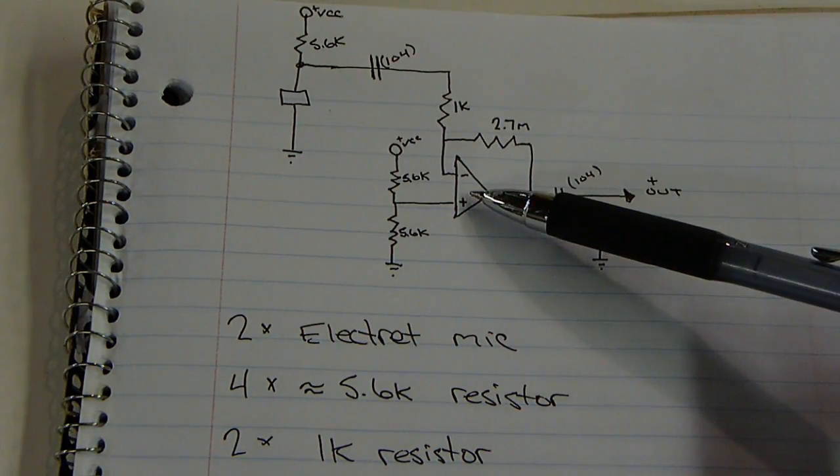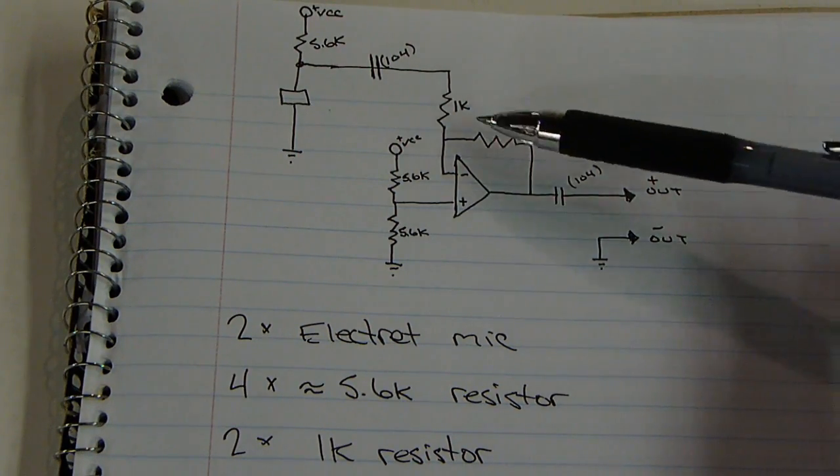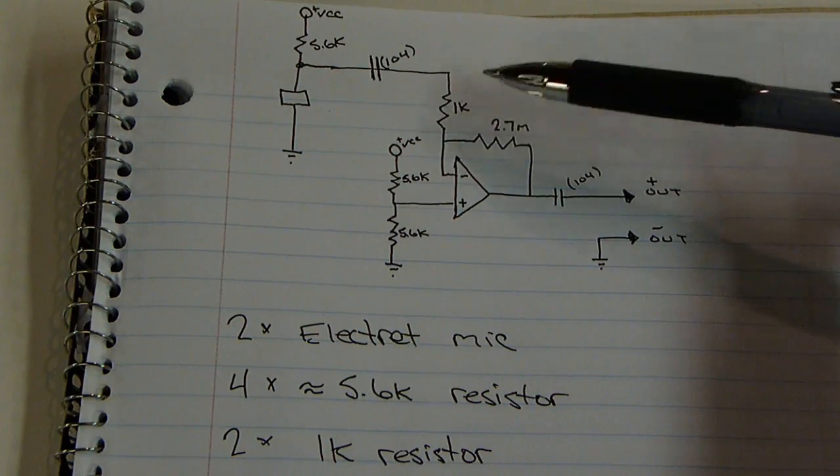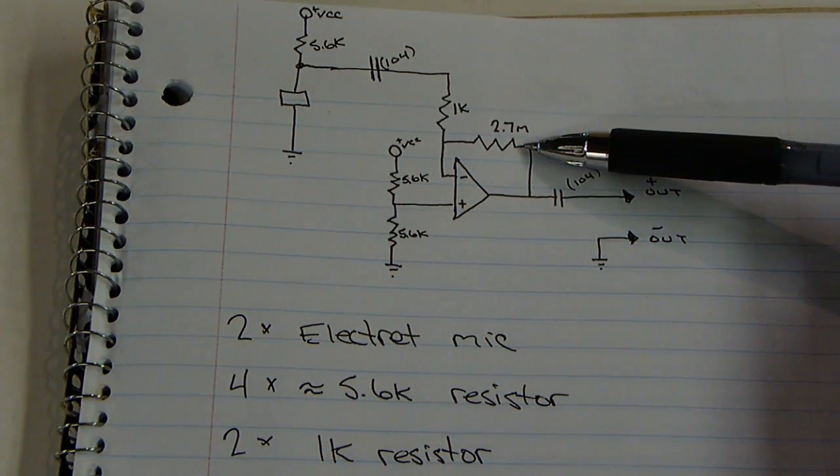Then it leads to this op-amp. The op-amp's amplification is determined by this 1K resistor and this 2.7-meg resistor.